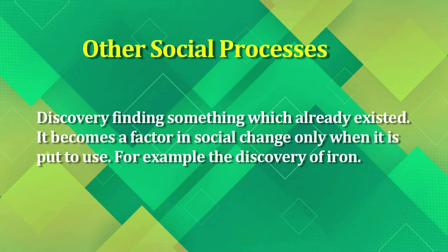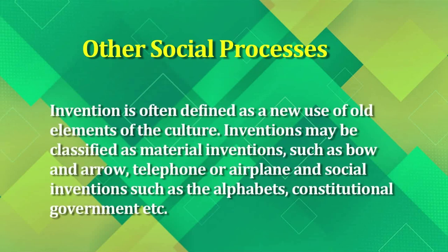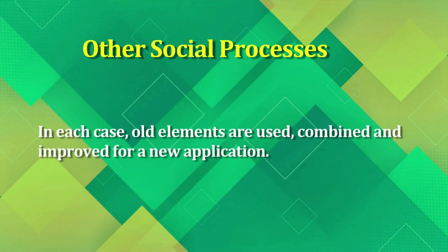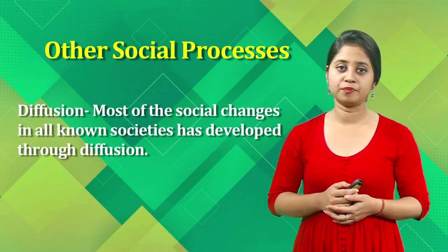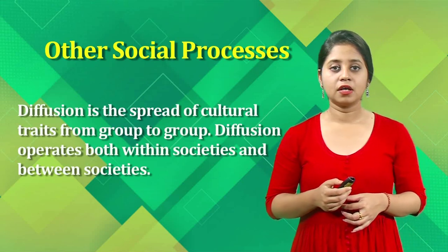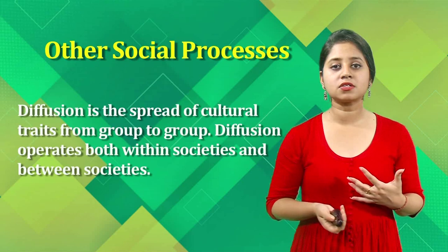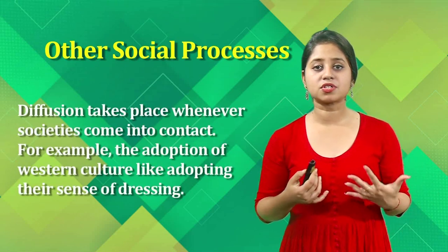Other processes of social change include discovery — finding something which already existed — which becomes a factor of social change only when it is put to use, for example the discovery of iron. Invention is often defined as a new use of old elements of a particular culture, and may be material (bow and arrow, telephone, airplane) or non-material (alphabets, constitutional government). Diffusion is the spread of cultural traits from one group to another, operating both within and between societies, and takes place whenever societies come into contact with one another.